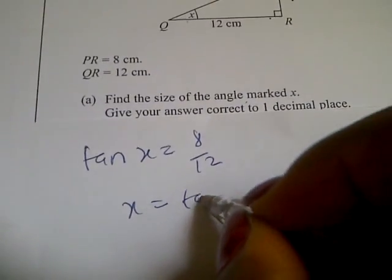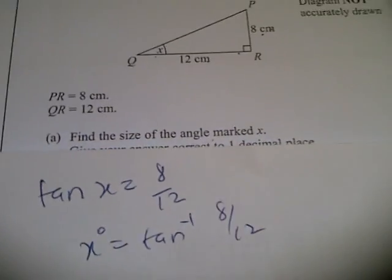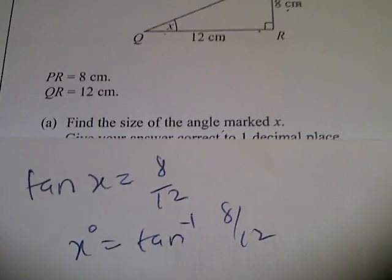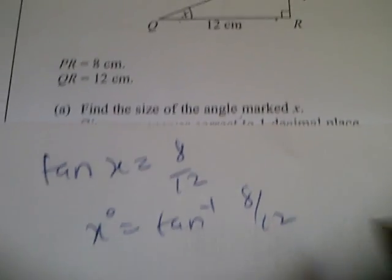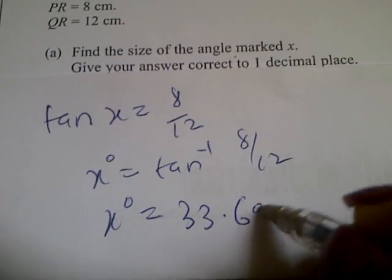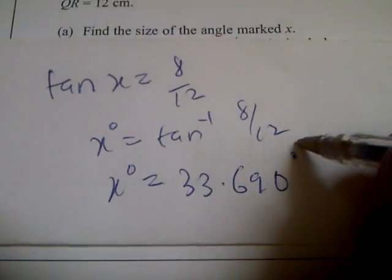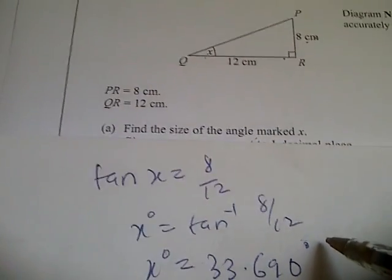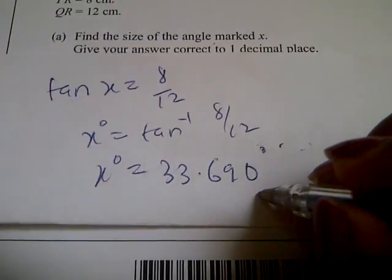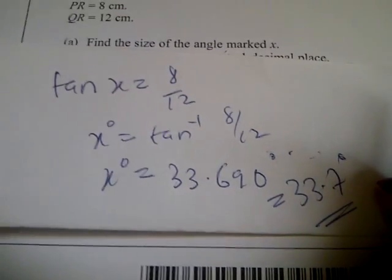x would be tan inverse of 8 over 12, which is shift tan of 8 divided by 12. The answer is x equals 33.690 degrees, which to one decimal place is 33.7 degrees. That's it for question 14.